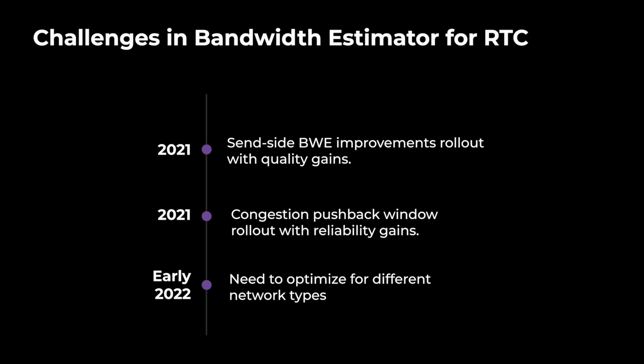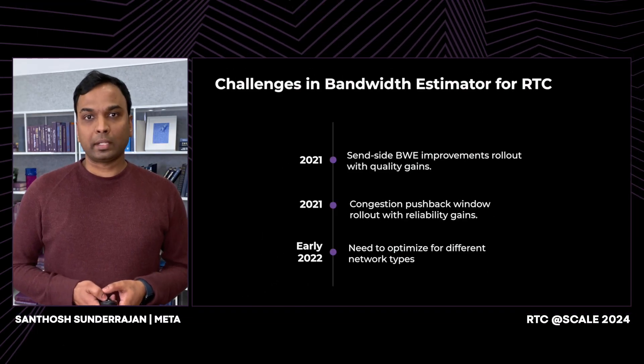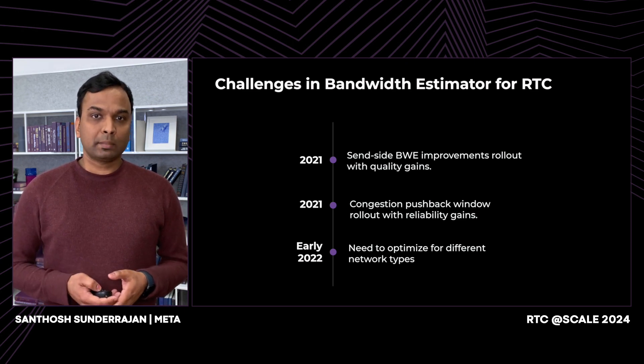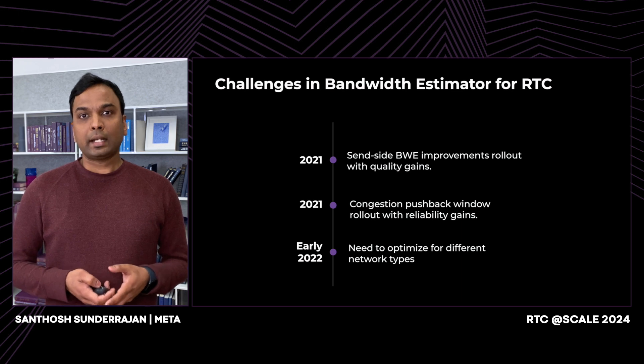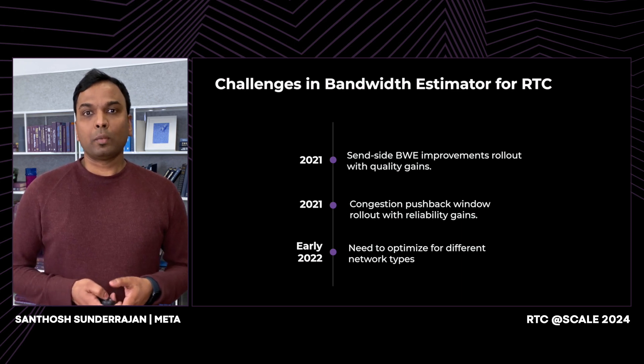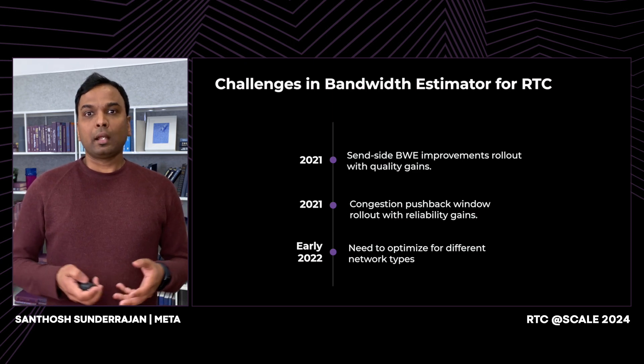In this talk, we will discuss in detail how we achieved quality and reliability gains using an ML-based solution by targeting different network types. Back in 2021, we rolled out sender-side bandwidth estimation improvements with quality gains for high bandwidth networks. But we saw reliability regressions in low bandwidth networks. Similarly, in 2021, we had another rollout for congestion pushback window with gains in reliability for low bandwidth networks, but it had lots of regression in quality.